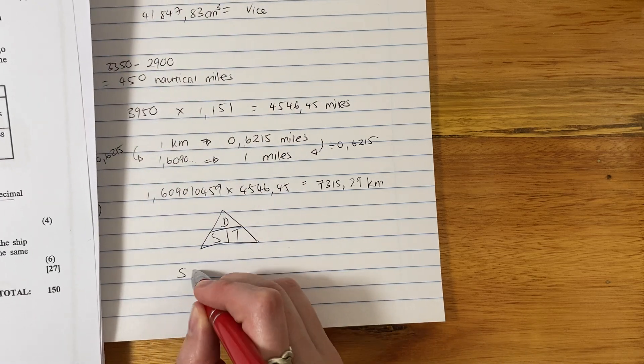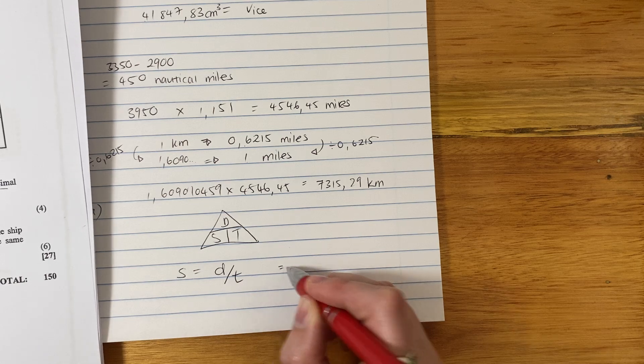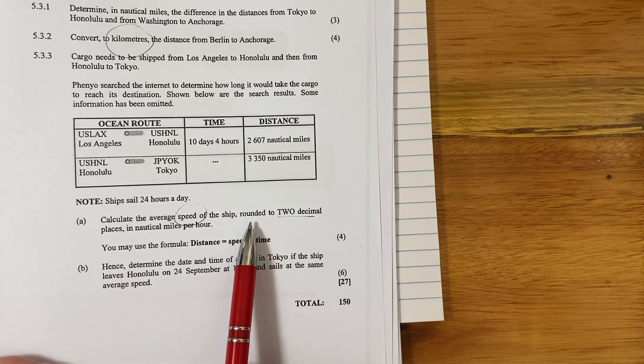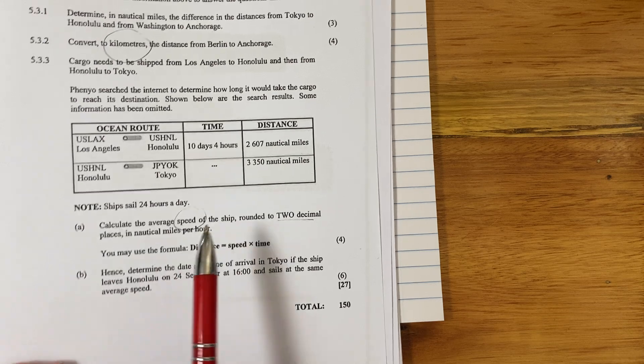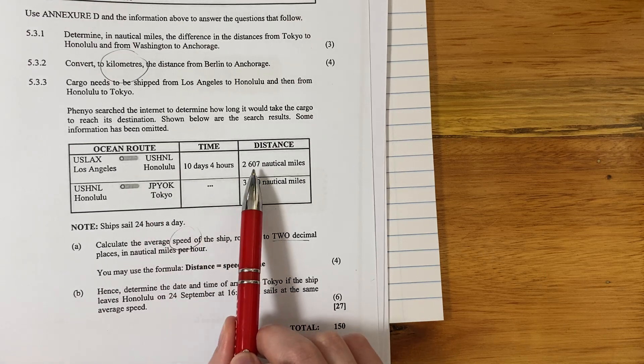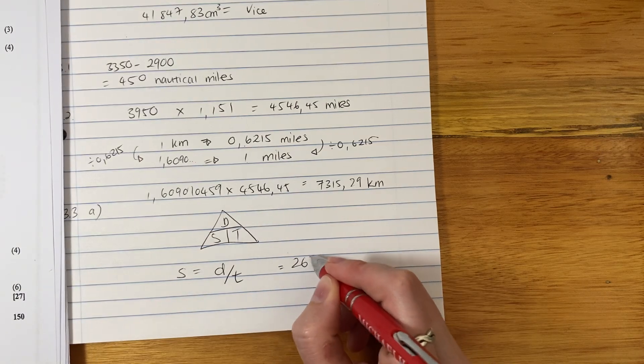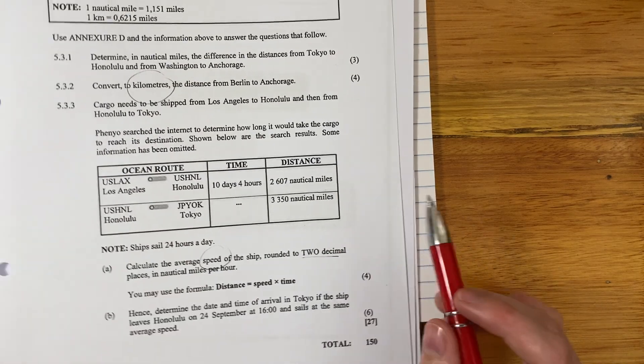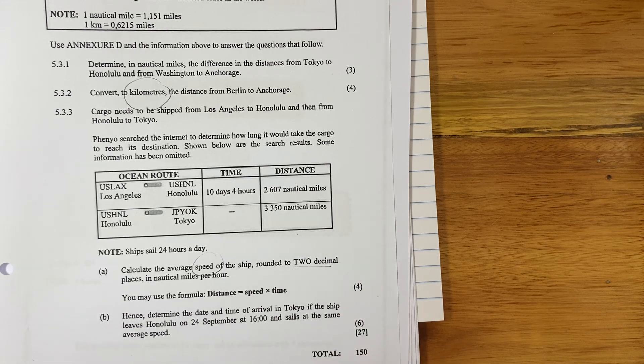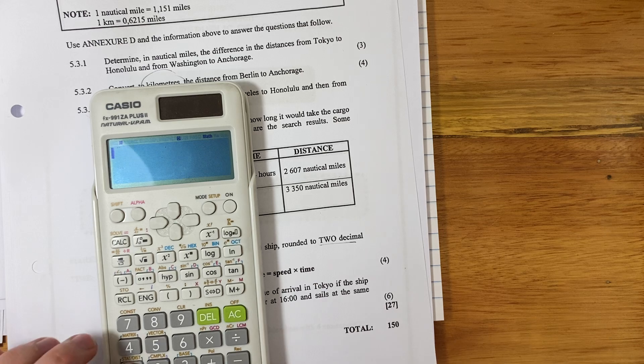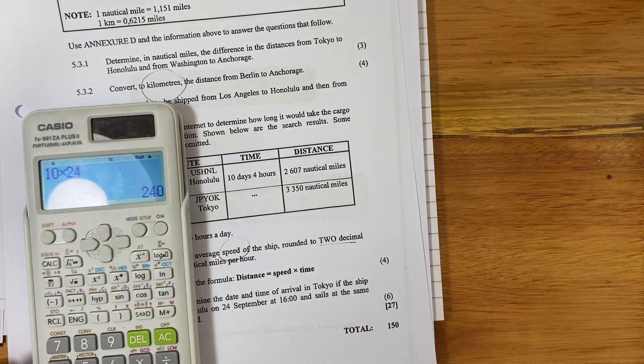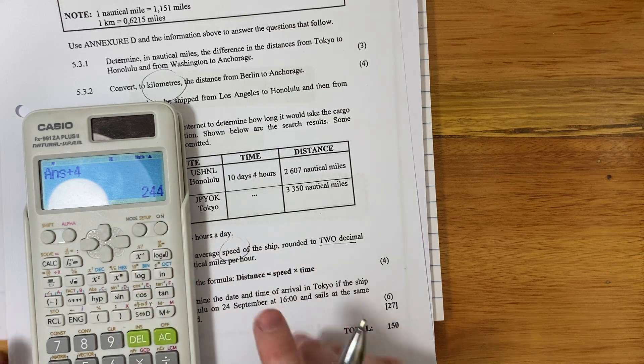So we're going to work out the speed. Speed equals distance over time. Now, the distance is fairly obvious. It tells us there, because it says calculate the average speed of the ship, rounded to two decimal places in nautical miles. We can only work out speed if we have distance and time. So we're just going to use the Los Angeles to Honolulu. So our distance is 2607 nautical miles. Now we can't use days and hours, right? You have to put it all into one unit. So we're going to convert our days into hours. If I have 10 days, each of those days has 24 hours. But then we have to add another four hours for those four hours that they gave us. So it's 244 hours in total.